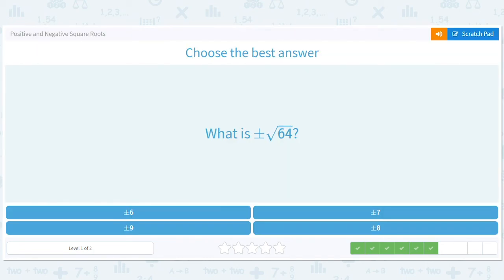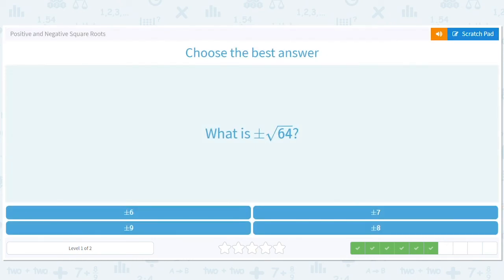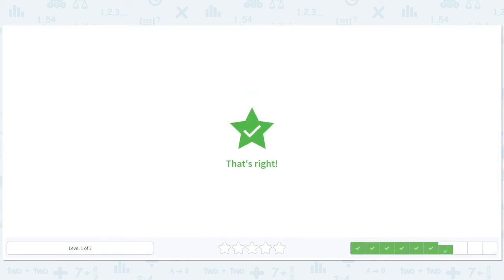What is plus or minus the square root of 64? That's just a way of saying give me both square roots at once. I'm greedy. I want them both. So the square root of 64, we know 8 times 8 is 64, so 8 is one square root. But negative 8 is another square root. So a way of writing both of them, two answers, is to say plus or minus 8.